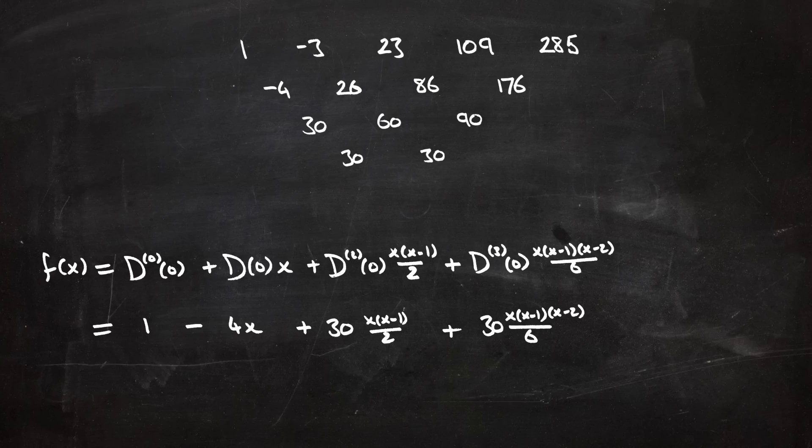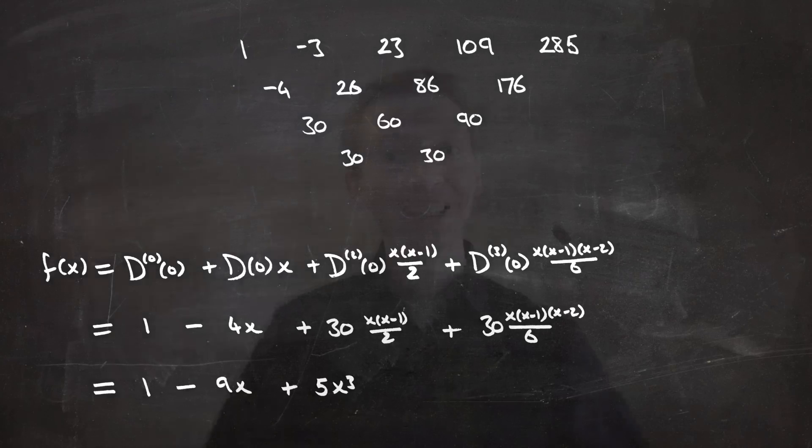Of course, this can be cleaned up. It turns out that this polynomial is one minus nine x plus five x cubed. It is just for polynomials, but if you're lucky enough to have a polynomial, then you have this formula, which is really nice to use.